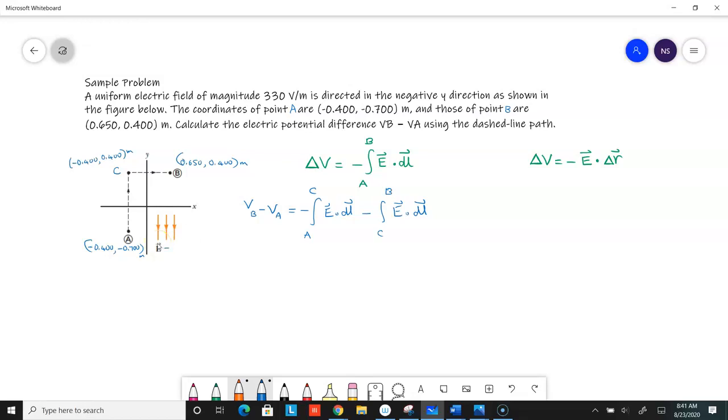The E is pointing in the downward direction, so it's 330 volts per meter in the negative J hat direction. When I'm doing the integral from A to C, I'm going in the upward direction, or in the positive Y direction. I can draw a little DL along my path here. The DL here is going to be DY in the positive J direction. Going from C to B, the DL will be DX in the positive X direction, or I hat direction.